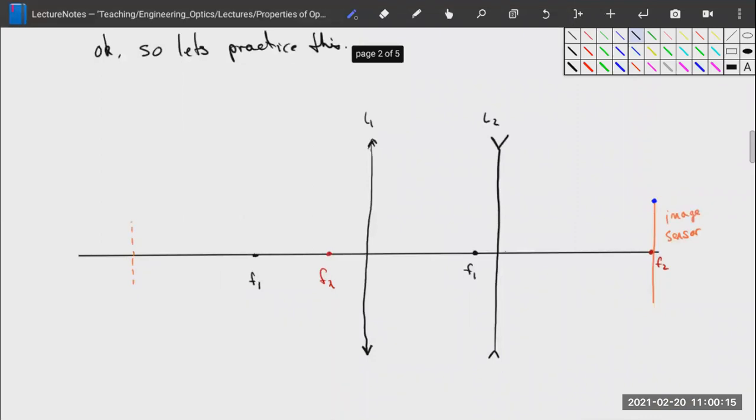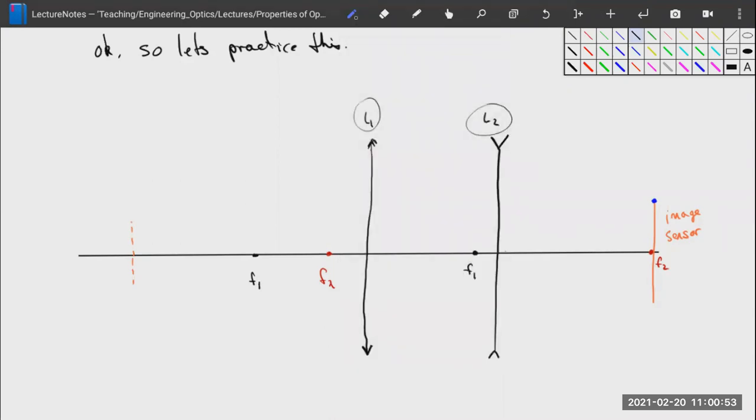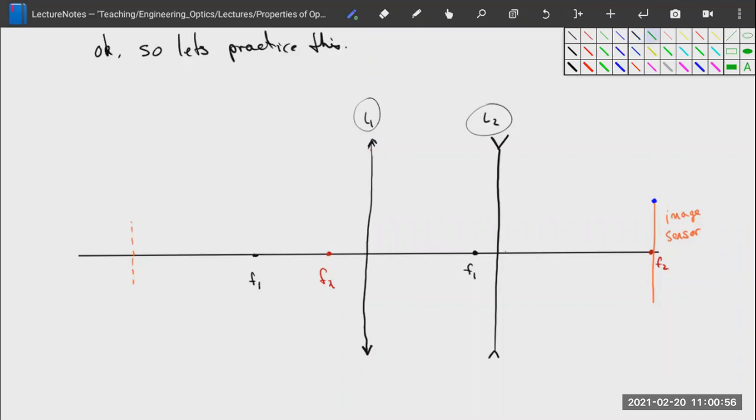Let's practice this. We have our optical system here and we're going to use the graphical method to figure out what our aperture stop and field stop are for this system. We have a positive lens one, a negative lens two, focal points for lens one, and focal points for lens two in red. We have an image sensor and our object plane over here. The first thing we're going to do is take our object plane and project it.